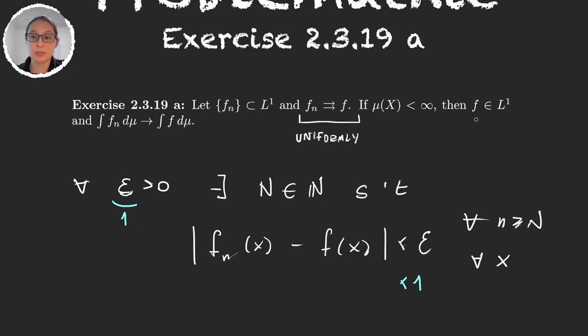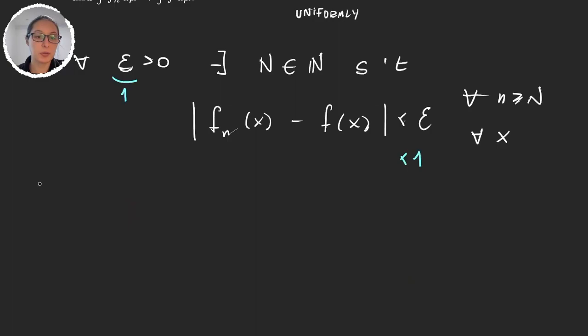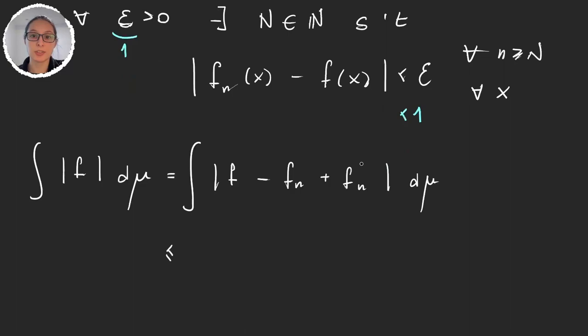The first thing we have to prove is that this function is in L1. So for that, what we do is we calculate the integral of the absolute value of f. And now integrating something is the same as integrating something plus zero, so we're going to do pretty much the only trick that we know in analysis, which is subtracting something and then adding it again. And now we can use the triangle inequality because we know that these functions are in L1, so we don't care about having the integral of f_n, and we can get this term here, which is what we have from uniform convergence.